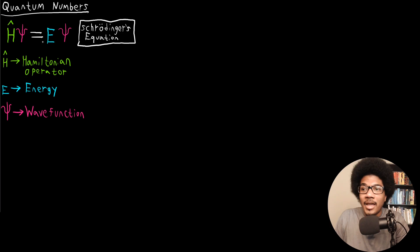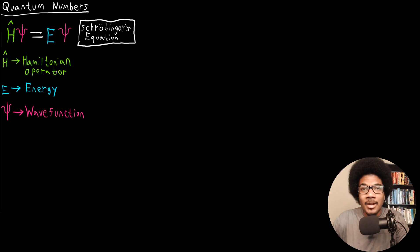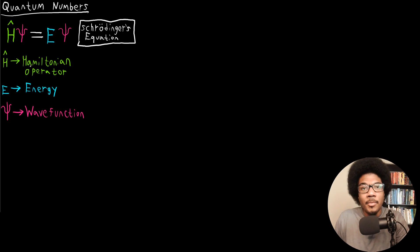Schrödinger's equation has three pieces. The first is H-hat — the little symbol above it is called a hat and denotes that this is an operator. This H is known as the Hamiltonian operator, and what it does is include all of the energy contributions to your system: operators for kinetic energy, potential energy, and whatever else is going on in your quantum system. The E here is the total energy of your electron or quantum system — once you have all contributions from the Hamiltonian added up, E is your total energy.